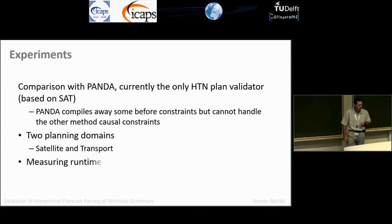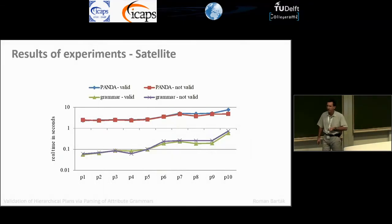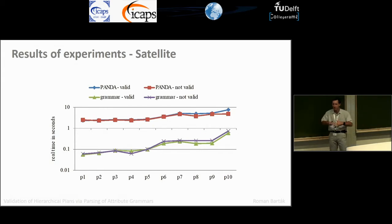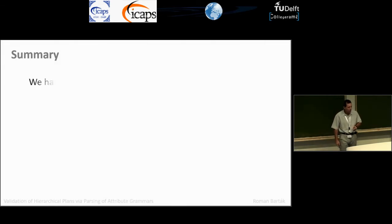We used two planning domains for comparison and measured runtime for both valid and invalid plans. For the satellite domain, runtime is shown on a logarithmic scale. PANDA shows little difference between valid and invalid plans; for our system, invalid plans take longer because we generate many more tasks. We appear to be about one order of magnitude faster. For the transport domain, results are similar.